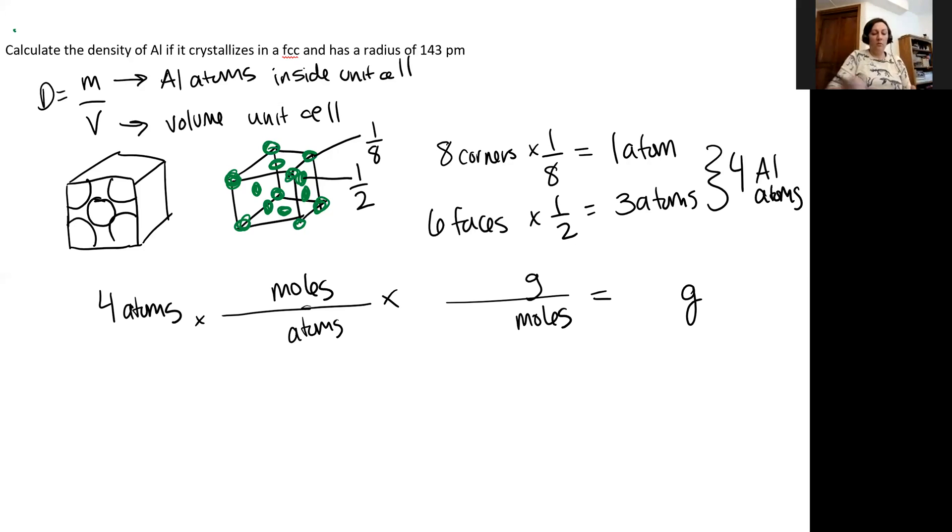So this is going to be a two step conversion right here. So for every one mole of aluminum, I'm going to have 6.022 times 10 to the 23rd atoms. It's Avogadro's number. And if I look at my periodic table, I can look up the molar mass of aluminum. It's going to be 26.9815 grams or somewhere close to that for every one mole. So I plug this into my calculator and I'm going to get a mass for my four aluminum atoms. That's going to be 1.792 times 10 to the negative 22 grams.